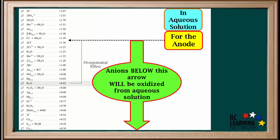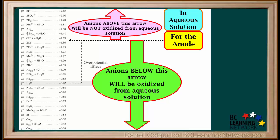Remember any anions below this arrow will be oxidized from aqueous solution. But any anions above this arrow will not be oxidized from aqueous solution. If one of these is present, water will be oxidized instead.